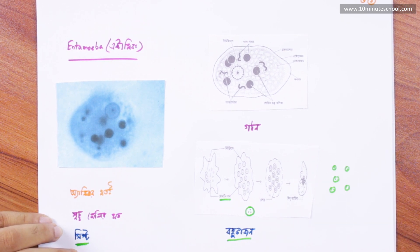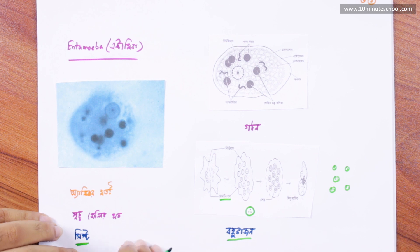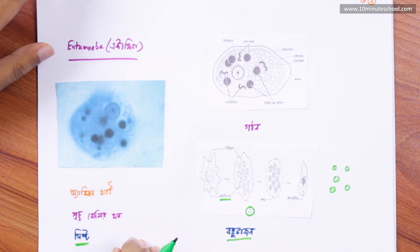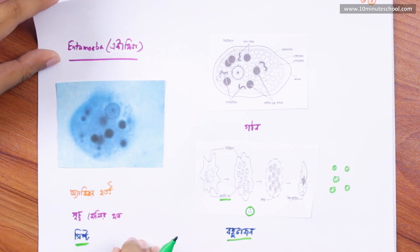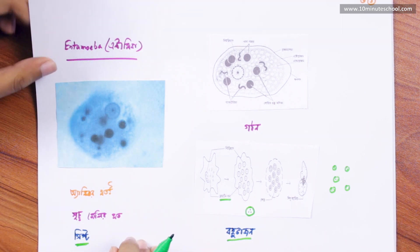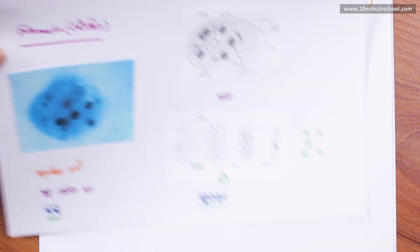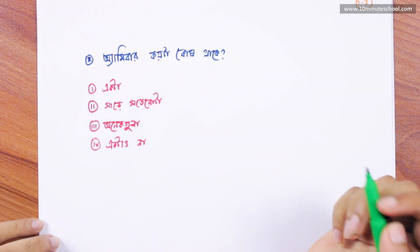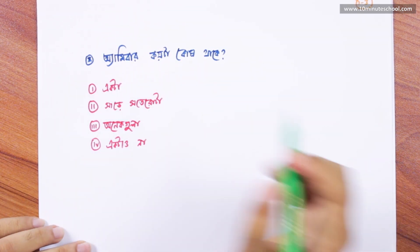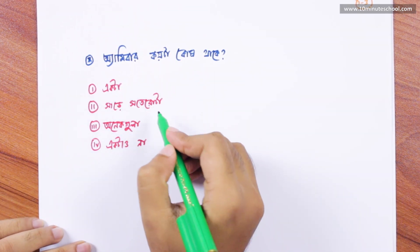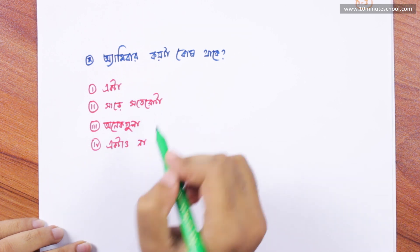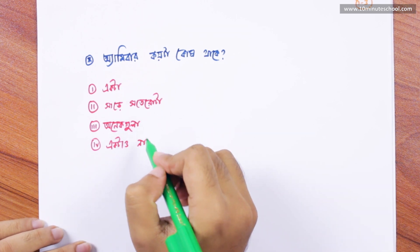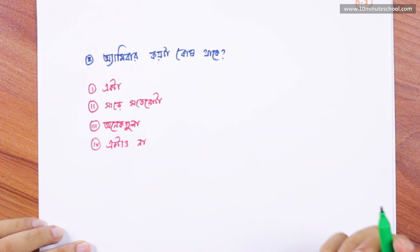What we know about animal. We can see that one thing. Now, we have a small question. We can say that animal is a little bit more. That's the only thing we know about animal.